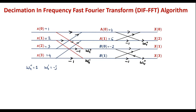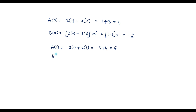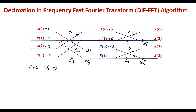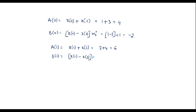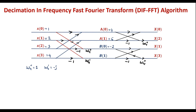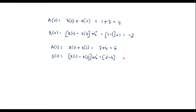Now let me calculate B(1). B(1) = (x(1) - x(3)) · W4^1 = (2 - 4) · (-j) = (-2)(-j) = 2j. So B(1) = 2j.